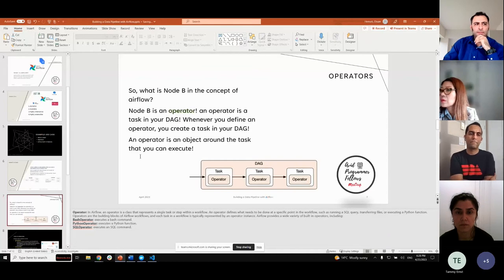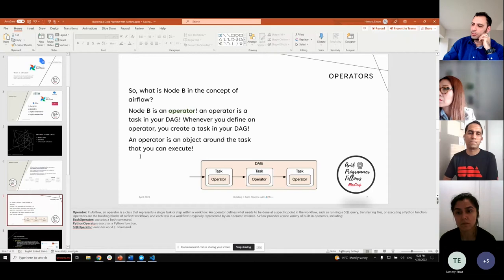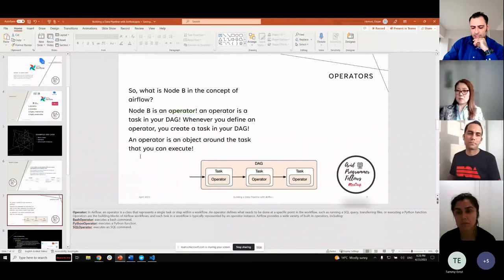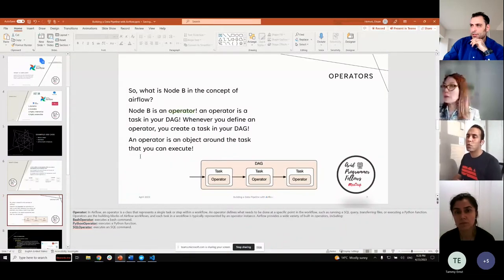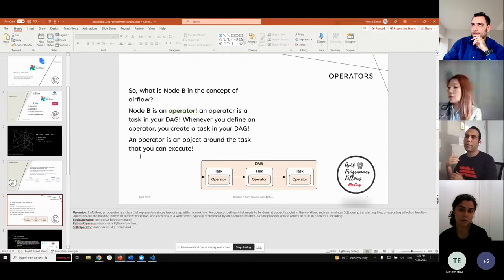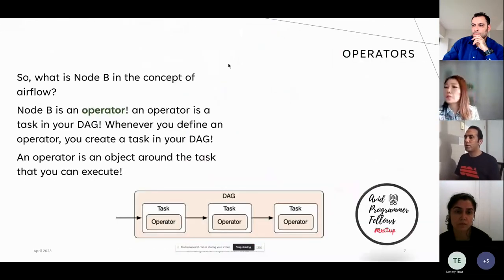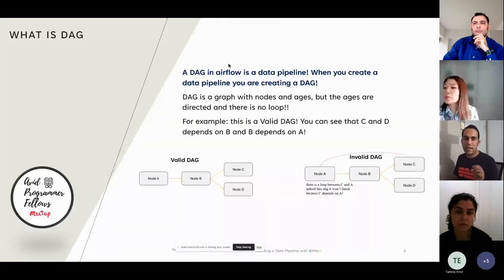One thing that's always top of mind in workflow management is handling failures and retries. How does Airflow handle those situations? I'm going to show you in the code, but before jumping into failure handling, I'm going to discuss operators first.